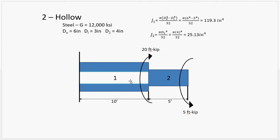As far as segment one goes, the hollow segment, there's an outer diameter of six inches, an inner diameter of three inches. And then, for the second segment, there's a diameter of four inches. At the end of the hollow segment, there is a torque in clockwise, twenty foot kip. And then at the very end, in counterclockwise, five foot kip.